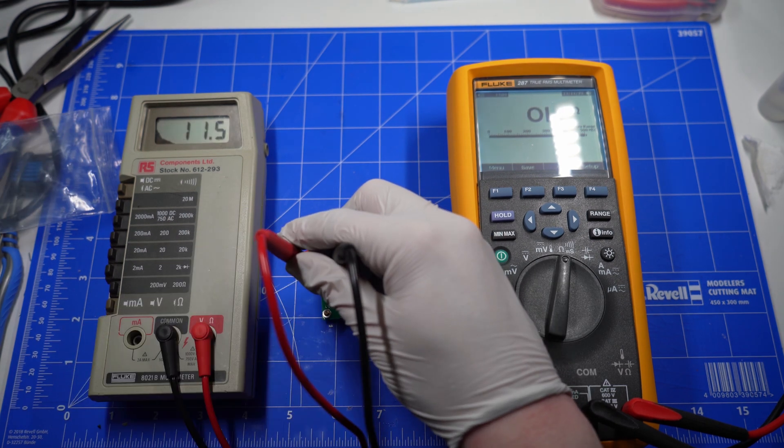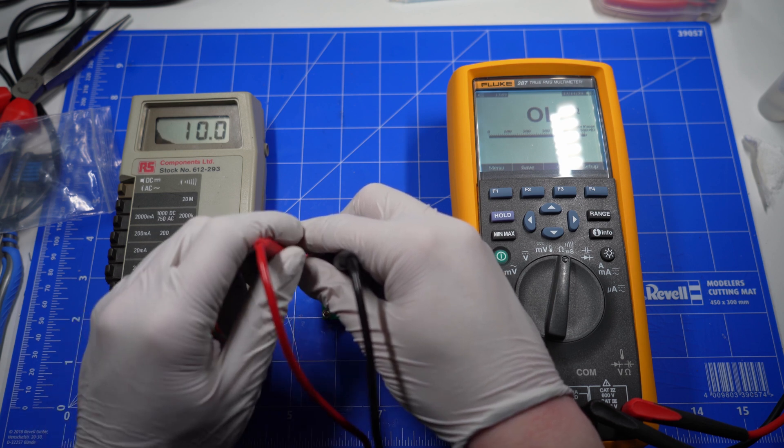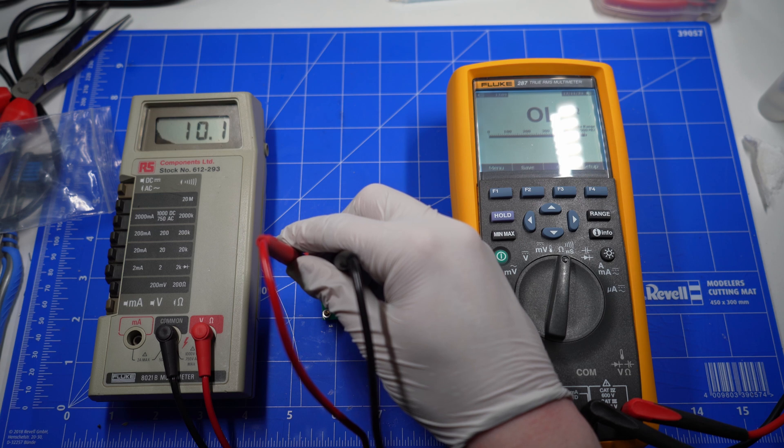Now I'm just testing a 10 ohm resistor. And yeah, it's pretty much bang on. As I should expect with Fluke. I mean, this meter is what, 30, 40 years old?